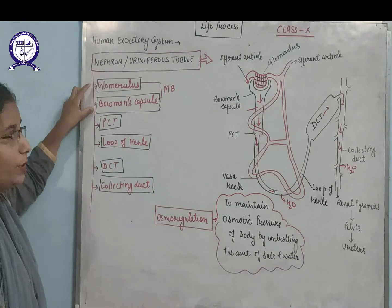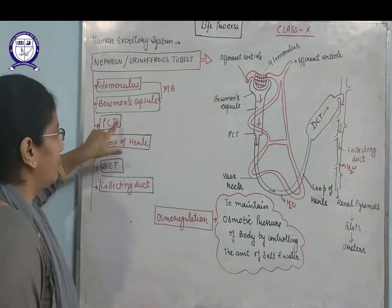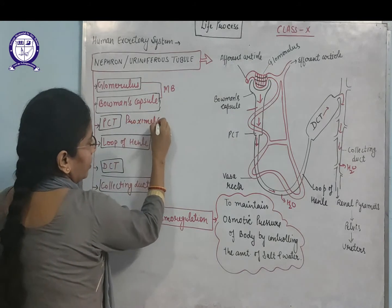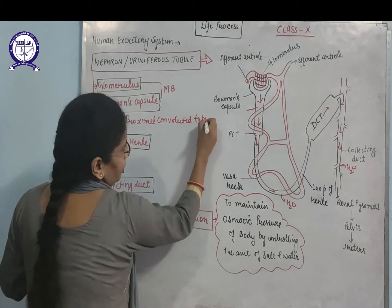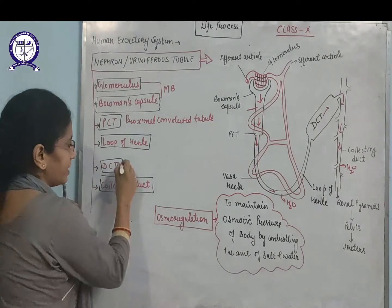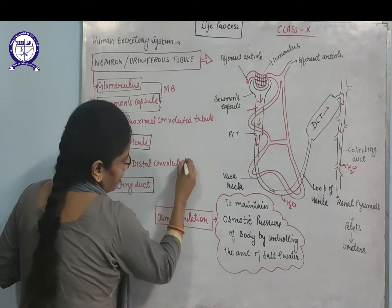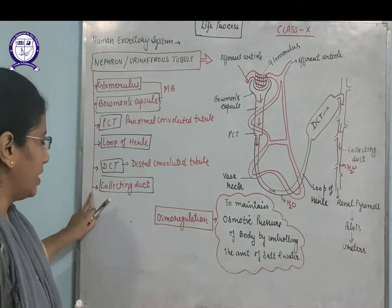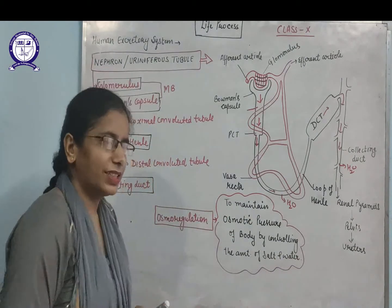The glomerulus and Bowman's capsule together are known as the Malpighian body. After that, waste passes to the PCT — proximal convoluted tubule — then to the loop of Henle, then to the DCT — distal convoluted tubule — and from there to the urinary bladder and then to the urethra.